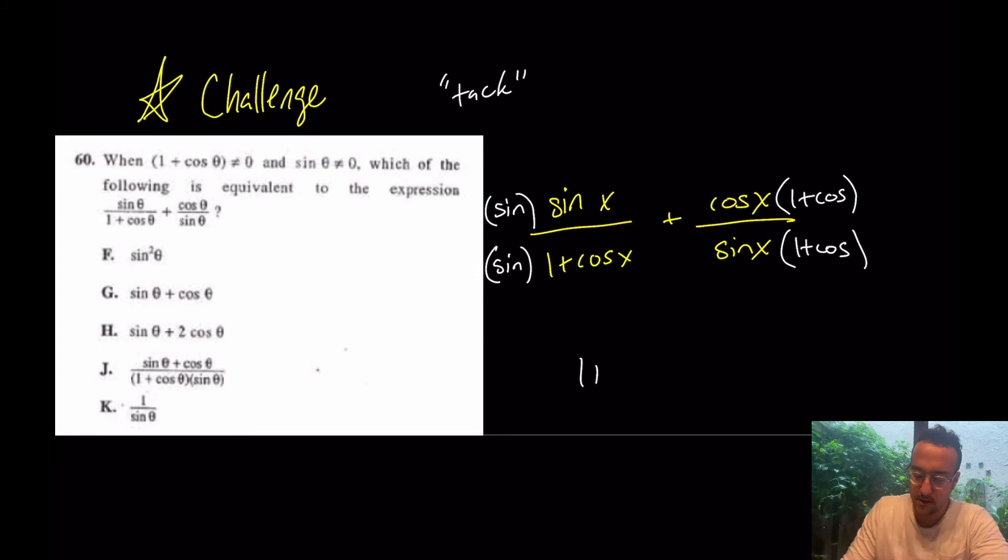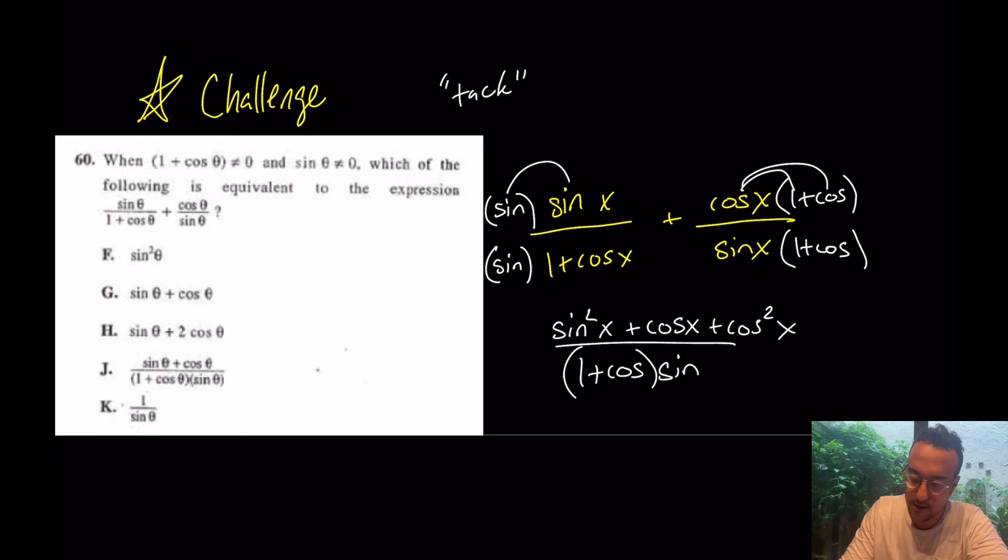We're about to be done. Really, just naturally from there, you have this common denominator of 1 plus cosine times sine all over. What's this? What's sine times sine? Sine squared x. What's cosine distributed? We have plus cosine x plus cosine squared x. Again, that came from cosine times 1 and cosine times cosine.